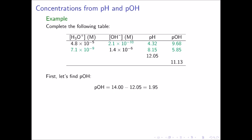The solution in the third row is stated to have a pH of 12.05. We can begin by calculating the pOH. In this case, this is equal to 14.00 minus 12.05, which is equal to 1.95. Now, in this case, we can either calculate the hydronium ion or the hydroxide ion. We will begin with the hydronium ion, which is equal to 10 to the negative pH, or 10 to the negative 12.05, which gives a value of 8.9 times 10 to the negative 13 molar.